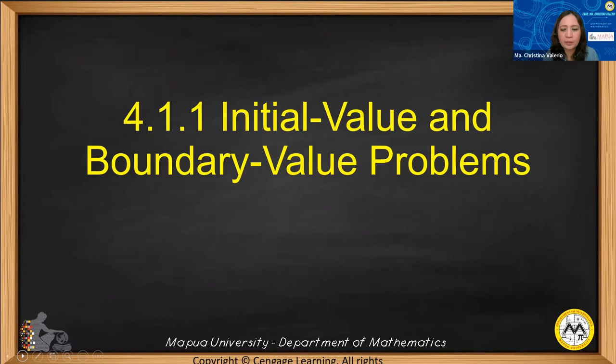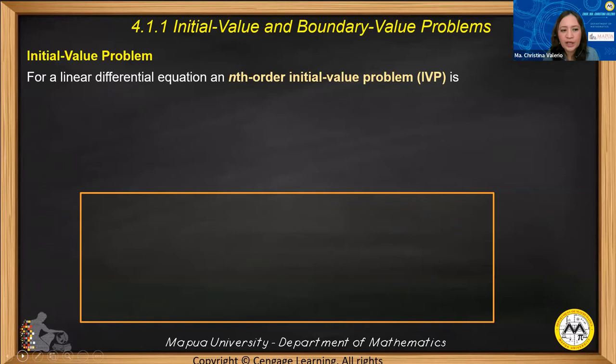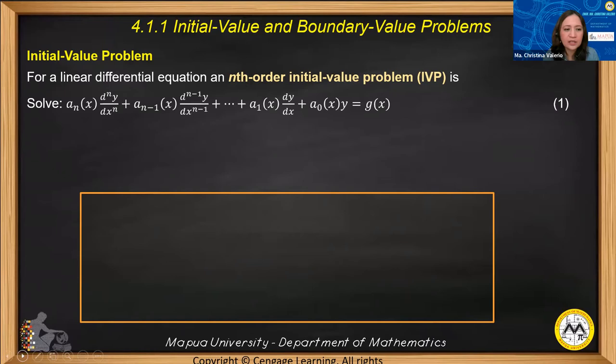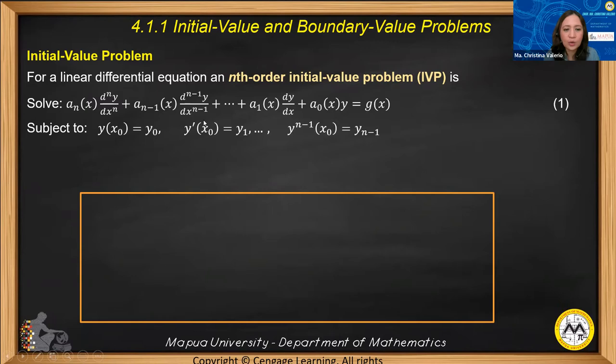For Section 4.1.1, we will have initial value and boundary value problems. An n-order initial value problem (IVP) is to solve the equation: a_n(x) times the nth derivative of y with respect to x, plus a_{n-1}(x) times the (n-1)th derivative of y, continuing down to a_1(x) times dy/dx plus a_0(x) times y equals g(x), subject to prescribed initial conditions.